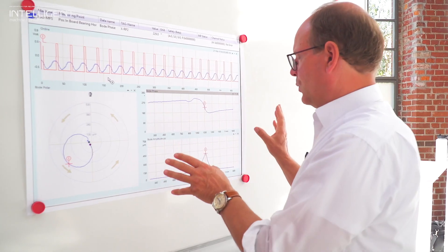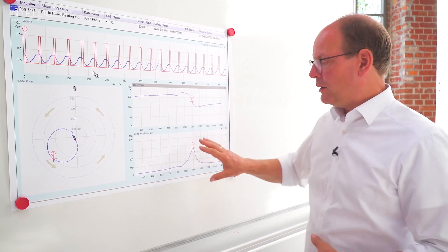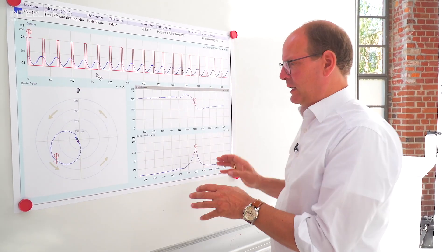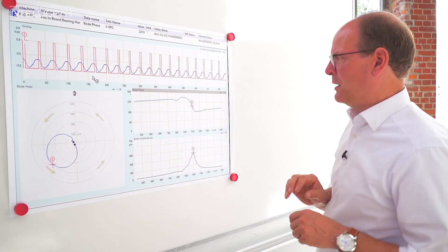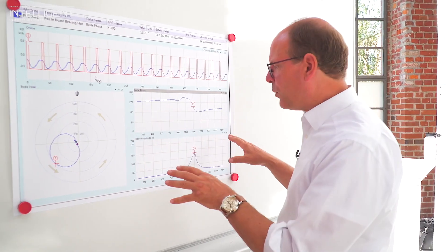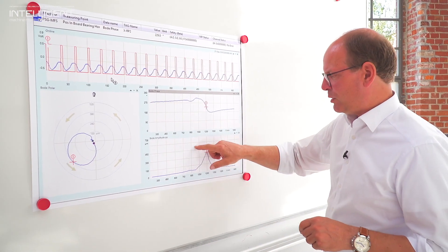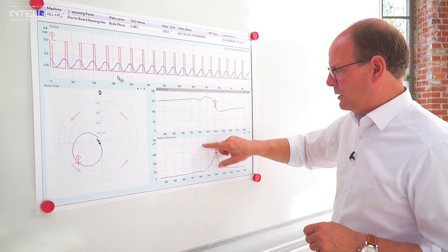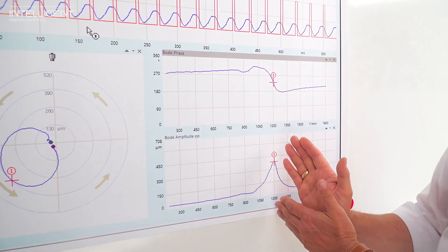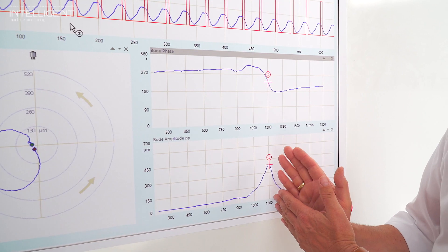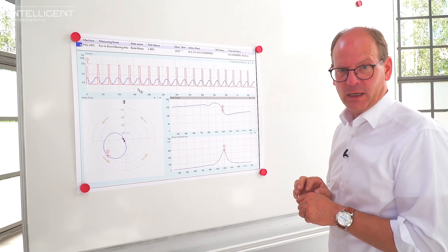What we also can do is that we use a set point multiplier here for this critical speed. That means if we have a safety system, if we have a machine protection system, and we normally have a protection limit, then we can here use a set point multiplier which will use a different protection limit exactly during this critical speed when the machine is running up, to avoid alarms for example.